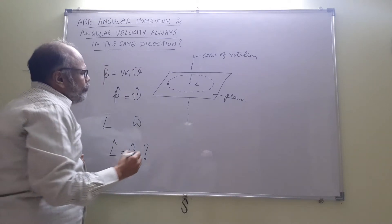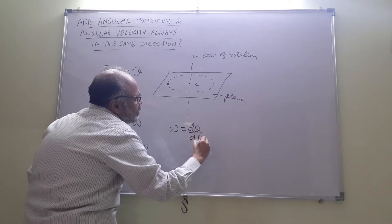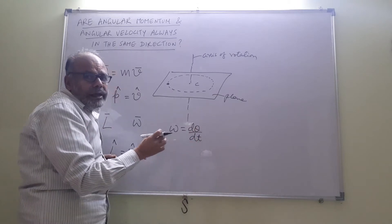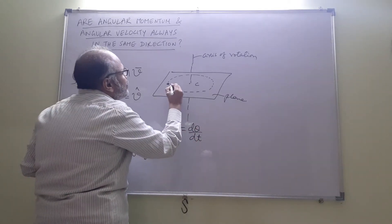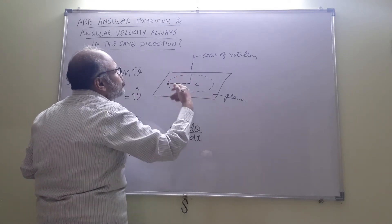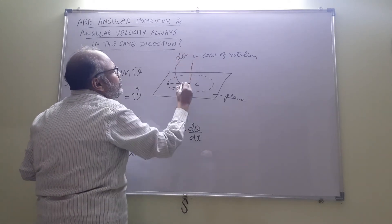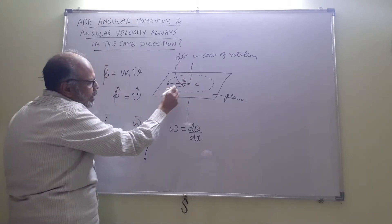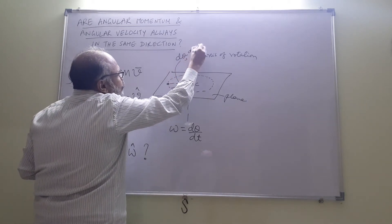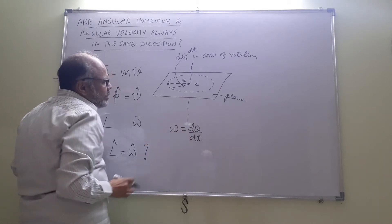We define omega: the magnitude of omega is dθ/dt — it is an infinitesimal angle dθ turned in an infinitesimal time dt. If we draw the radius here and it sweeps an angle dθ in a time dt, the magnitude of the angular velocity will be dθ/dt.